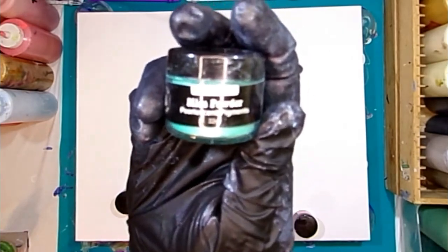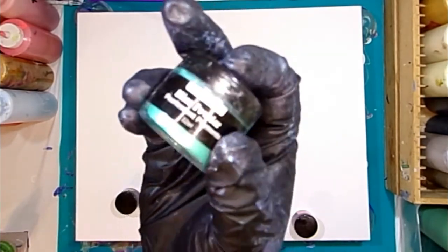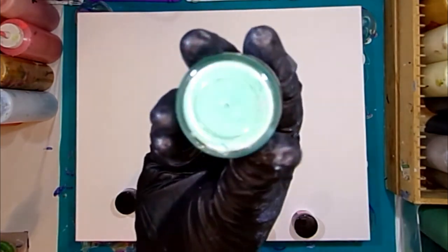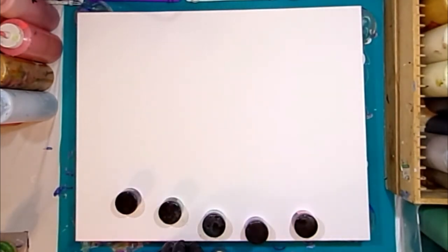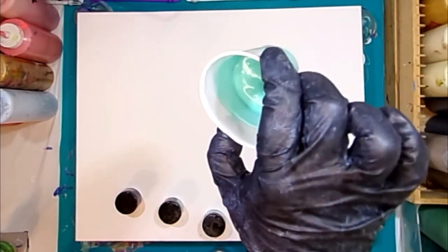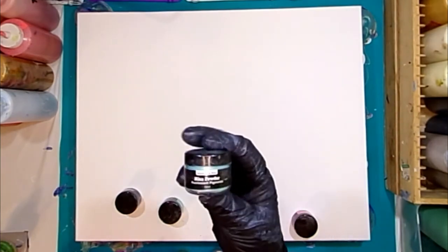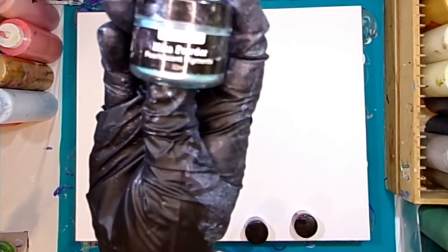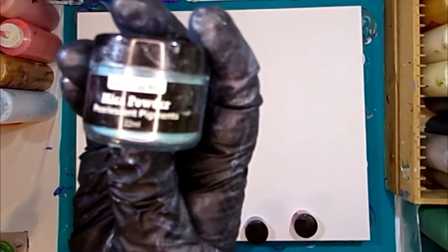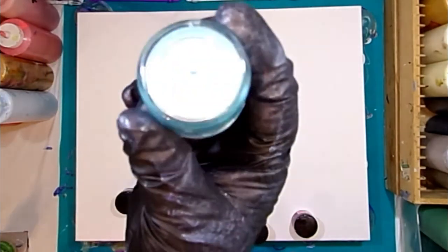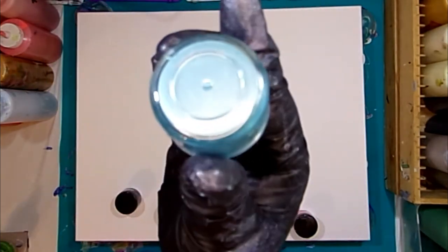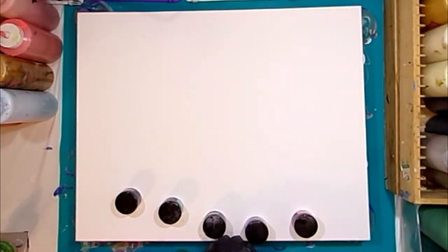We're also going to use this sea green, beautiful kind of teal green color, with beautiful shimmer to these. Then we're also going to use this gorgeous robin's egg blue. This is probably one of my favorite ones, this robin's egg blue.